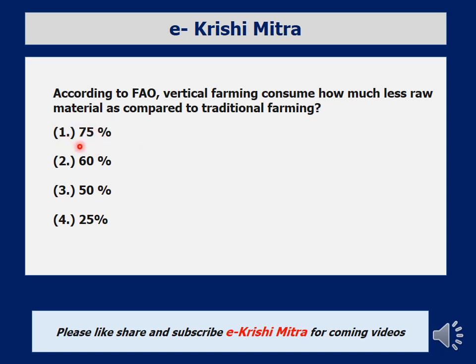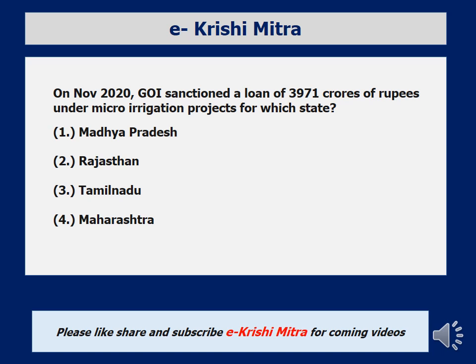Fourth question: in November 2020, the Government of India sanctioned a loan of 3,971 crores of rupees under a micro irrigation project for which state? Options are Madhya Pradesh, Rajasthan, Tamil Nadu, and Maharashtra. Micro irrigation methods are commonly associated with Rajasthan. However, in November 2020, the Government of India provided this loan to Tamil Nadu. So the answer is Tamil Nadu.